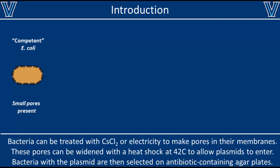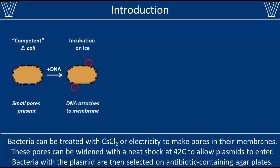Competent bacteria have small pores in their membranes which allow plasmid DNA to pass through. Without these pores, transformation could not occur. Therefore it is very important to use competent bacteria. Several strains of competent E. coli are available commercially; alternatively, you can prepare your own by treating them with cesium chloride or electricity to create these membrane pores.